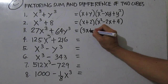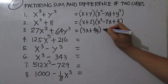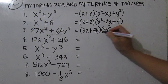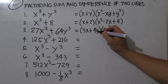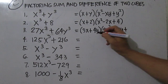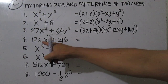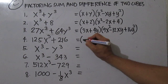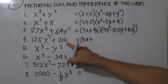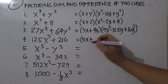3x plus 64y cubed — the cube root of 64y cubed is 4y. From this factor, you square the first term: 3x times 3x is 9x squared. Then multiply 3x times 4y, which is 12xy. Then write the opposite, so negative 12xy, plus 4y times 4y is 16y squared. For the next example, 5x plus 216 — 216 is just 6 cubed, so the cube root of 216 is 6.